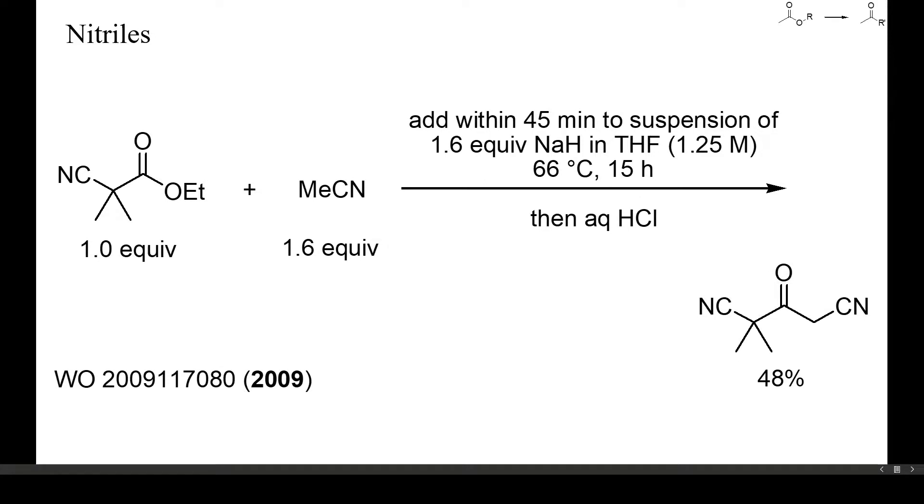With the bulky ester of this example, the yield of cyanoketone was only 48%. One potential side reaction here was addition of the acetonitrile anion to the cyano group of the ester, but this did not occur to a large extent.